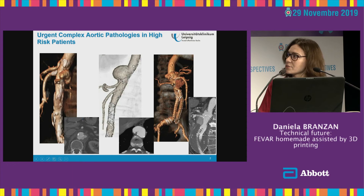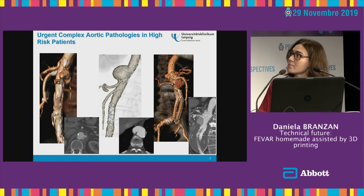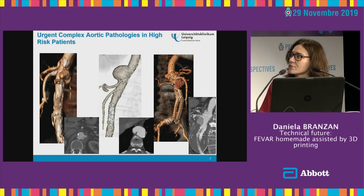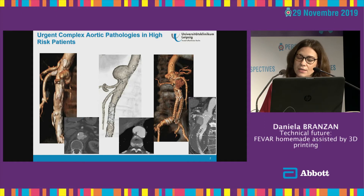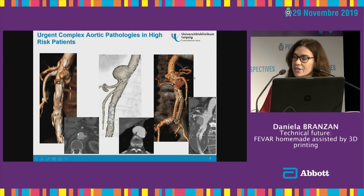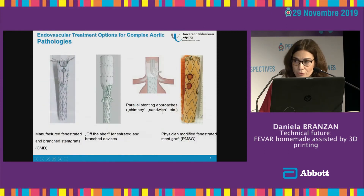Most of us are confronted with this kind of complex aortic pathology. Most of them are high-risk patients when they're presented in an acute setting. You can see here perforating aortic ulcers, symptomatic thoracoabdominal aortic aneurysm, mycotic aortic ulcers after endovascular aortic repair. For those high-risk patients, we also have endovascular solutions.